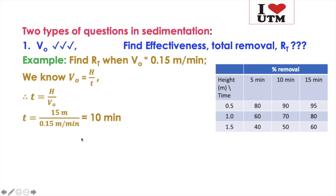Focus on our question: find the RT when V0 is 0.15 meter per minute. We know that V0 is equal to H divided by T — this formula you have to memorize. Rearranging, T is equal to H divided by V0. Our H is the height of the column, which is 1.5 meters, and V0 is 0.15 meter per minute, so T equals 1.5 divided by 0.15, which is 10 minutes.